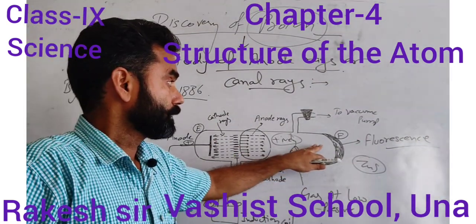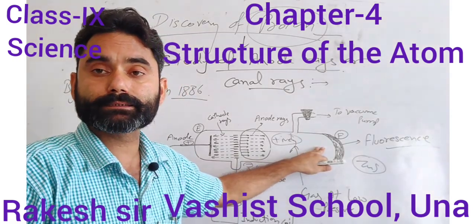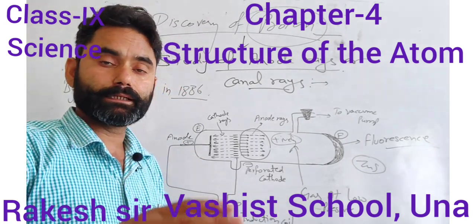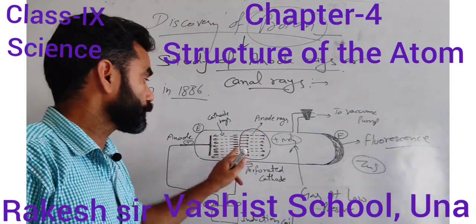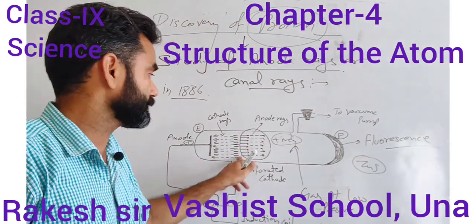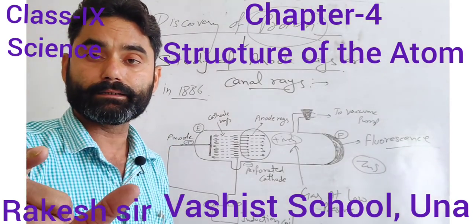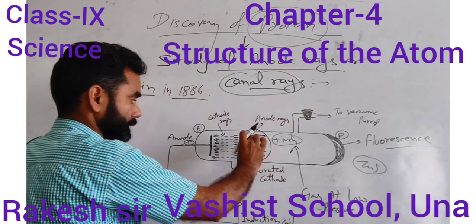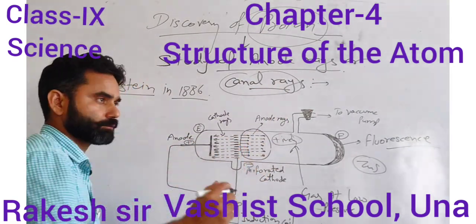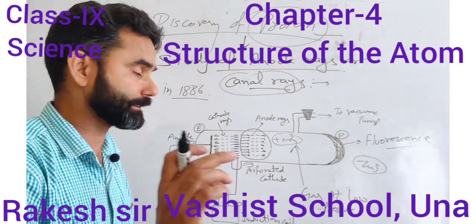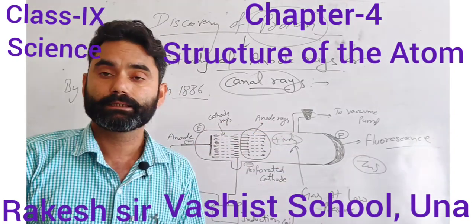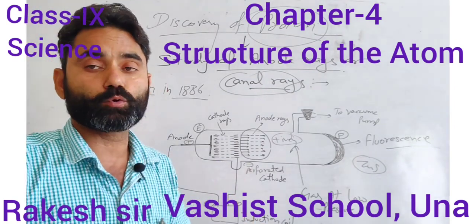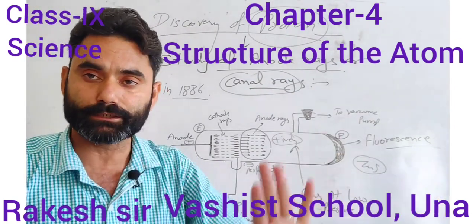This is how the proton was discovered through the discharging experiment. Goldstein made just a little modification — the cathode was converted into a perforated cathode, a metal plate with holes in it. The rays produced pass through the holes, just like canals, which is why they were also called canal rays.